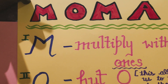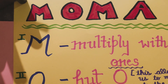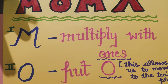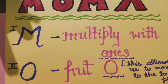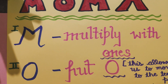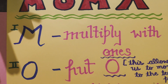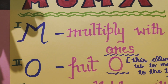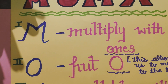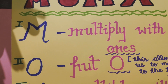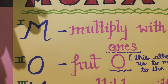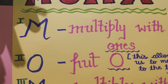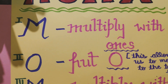Yes, MAMA! So children, let's learn the steps. The first step is M — M is multiply with ones. So whatever the number is, whether it is a three-digit number or a two-digit number, we place that number on top and the other two-digit number at the bottom. Then we multiply the bottom number's ones digit with the top digits. So first rule is: multiply with ones.